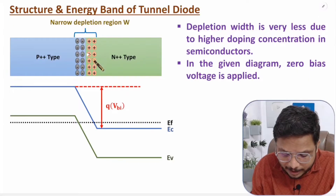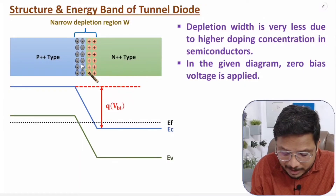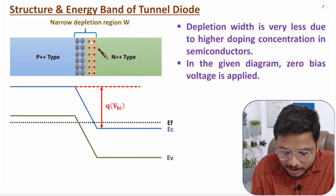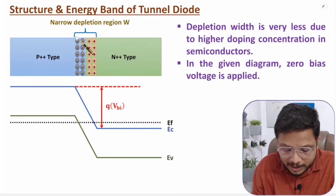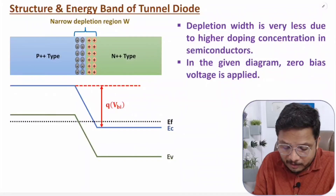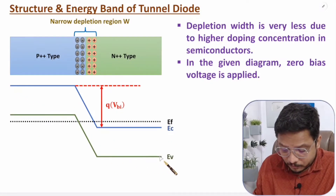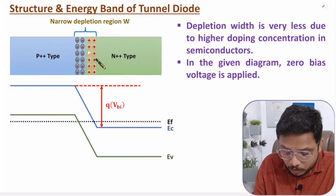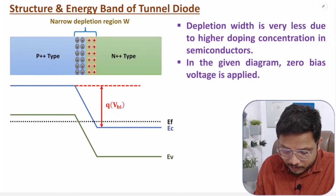When we diffuse p++ and n++ material together to form a junction, at the p-type side there are negative ions as it accepts electrons, and at the n-type side there are positive ions as it donates electrons. The depletion region formed is very narrow because the doping concentration is very high. The energy bending due to this depletion region is q×Vbi, where Vbi is the built-in potential.